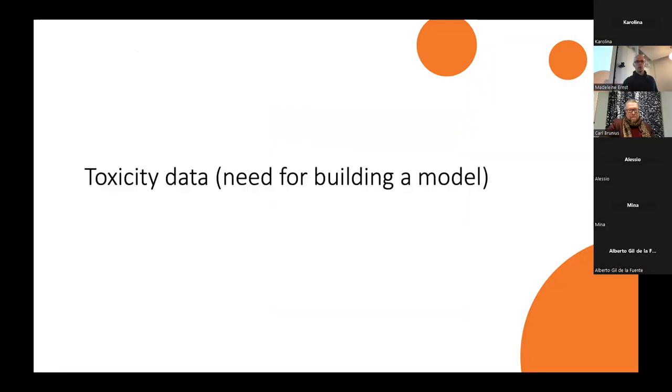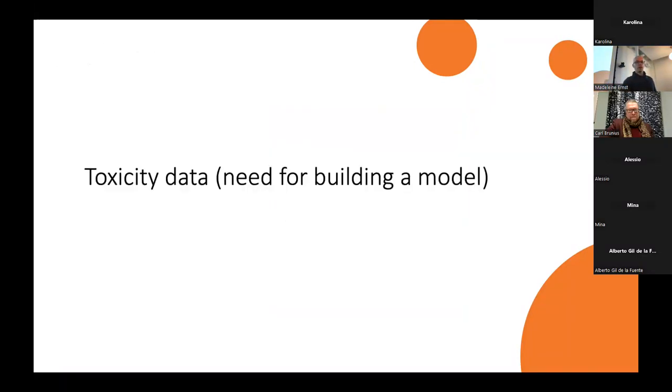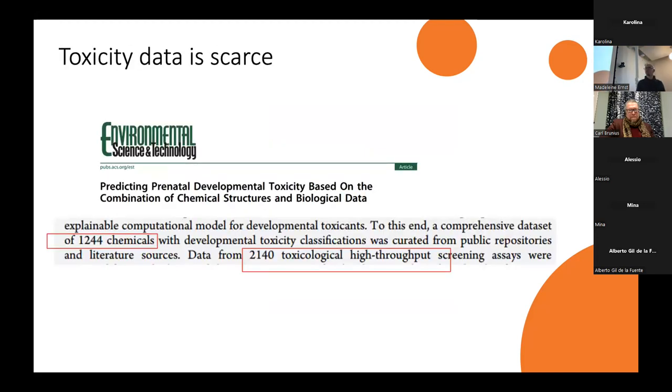So let's first talk about the model phase. I need a lot of toxicity data to be able to build a model. In general, toxicity data is quite scarce. In PubChem, there are around 100 million known chemical compounds, whereas high-quality papers build their models on thousand-ish chemical compounds. So there's a large gap between the chemical compounds which we know and which we can measure and quantify, and those where we have toxicological data.